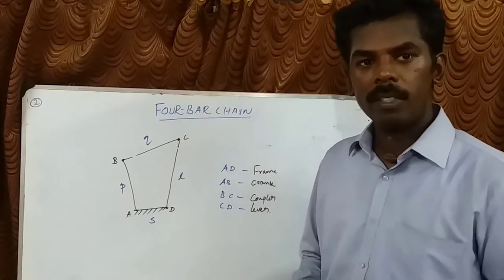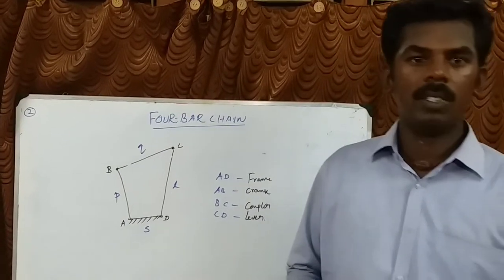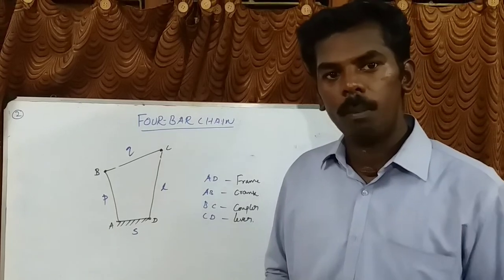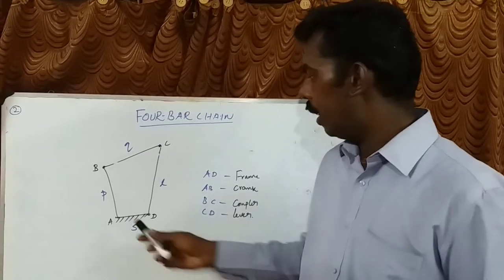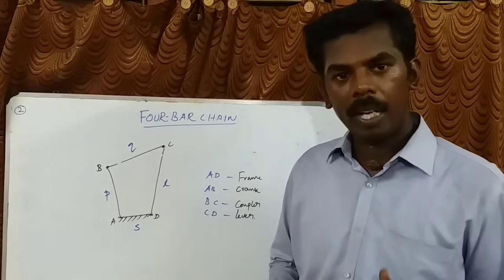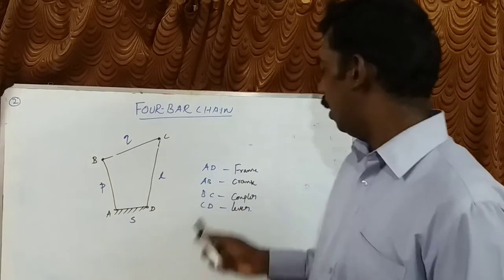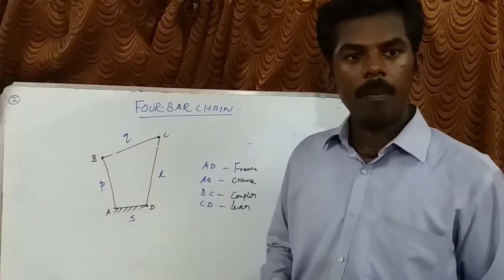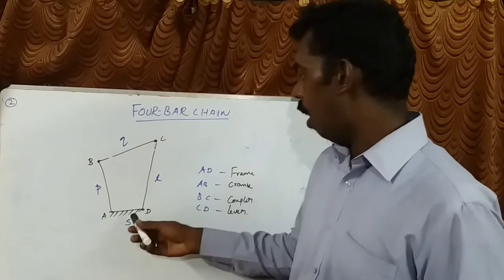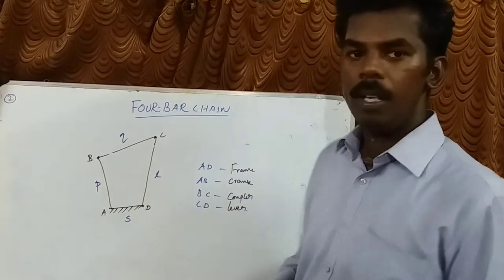The 4-bar chain is the most fundamental of the plain kinematic chain. Basically it consists of 4 rigid links which are connected in the form of a quadrilateral by 4 pin joints, like A, B, C, and D. The link that makes a complete revolution is called the crank. Here AB is the crank. The link opposite to the fixed link is called the coupler. Here BC is the coupler.